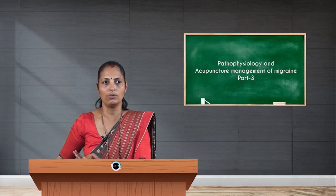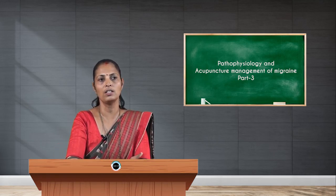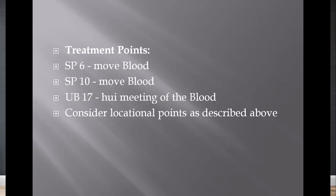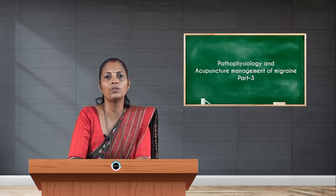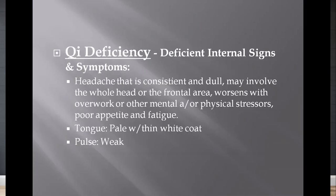The pulse may be choppy or sometimes wiry. Treatment options: Spleen 6 helps to move the blood; Spleen 10 also helps to move the blood; UB 17, being an influential point for blood, can mobilize the blood. We can also apply cupping at some points.